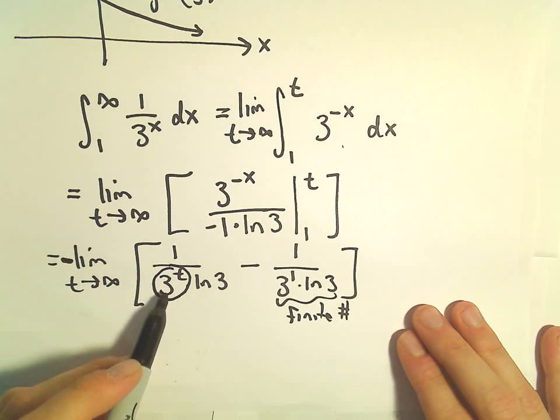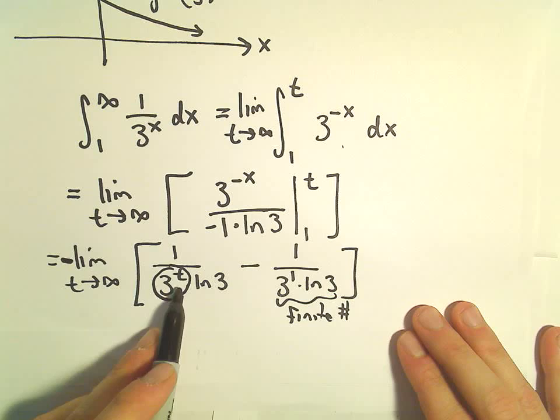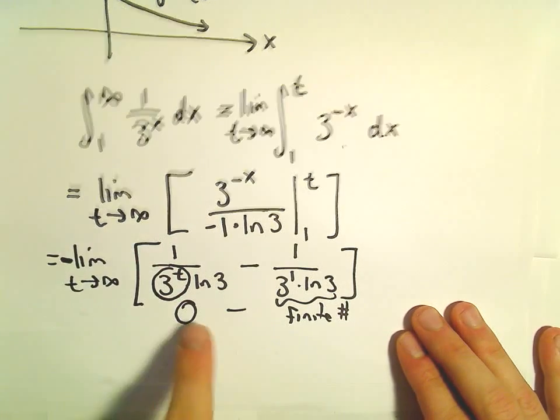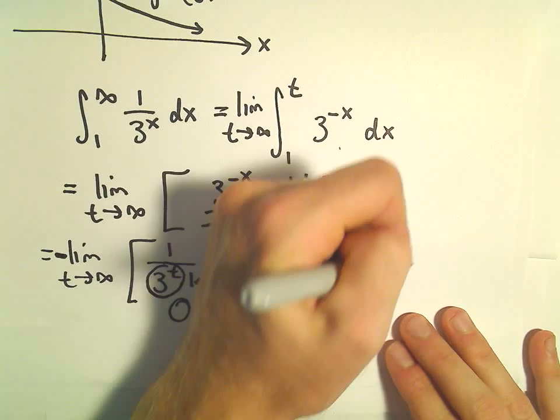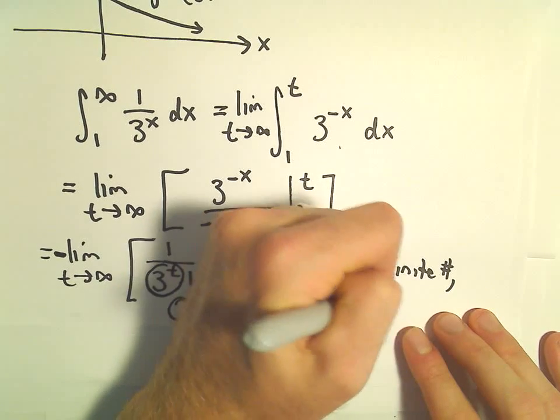3 to the t would get very, very large. So then we would have 1 over a very big number. Well, 1 over a big number goes to 0. So we've got 0 minus some finite number. This improper integral is definitely going to equal some finite number, and that tells us it's convergent.